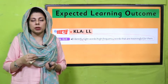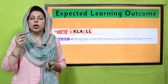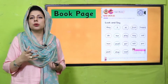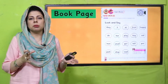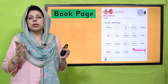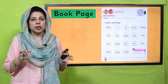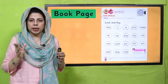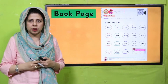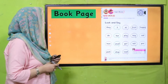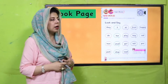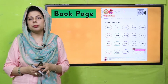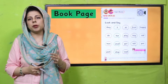...wo dekh dekh ke bachchon ko yaad ho jate hain. Aur isi ki madad se bachchon ka jo reading ka skill hai wo develop hota hai, aur unki reading ke saath jo unka love hai ya connection hai wo built hota hai. Kyunki agar ek page ke upar wo maximum words bina kisi difficulty ke padh sakti hain to wo agle page ya agle content ko pardhne ke liye motivate ho jate hain. Kitaab ka safha dekh lijiye — there are some sight words mentioned here.